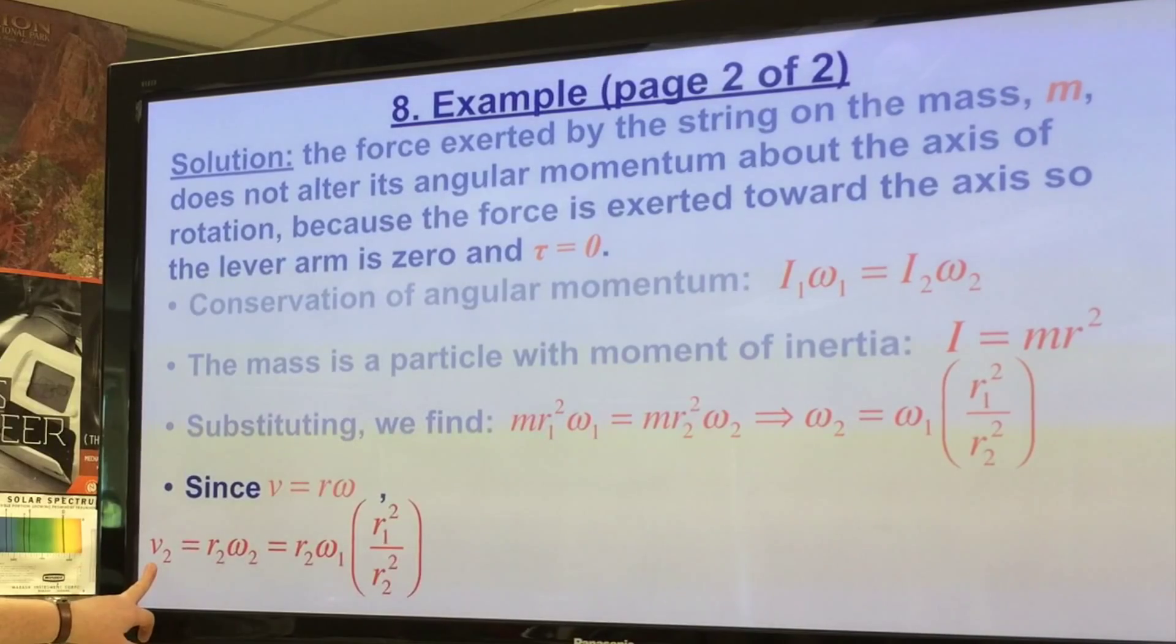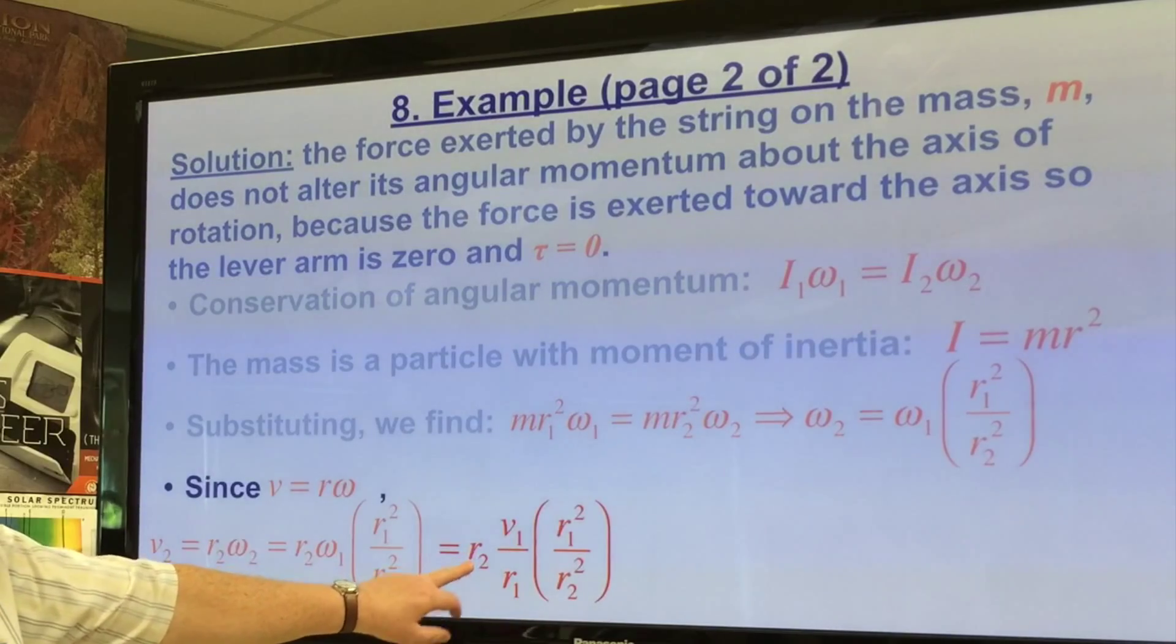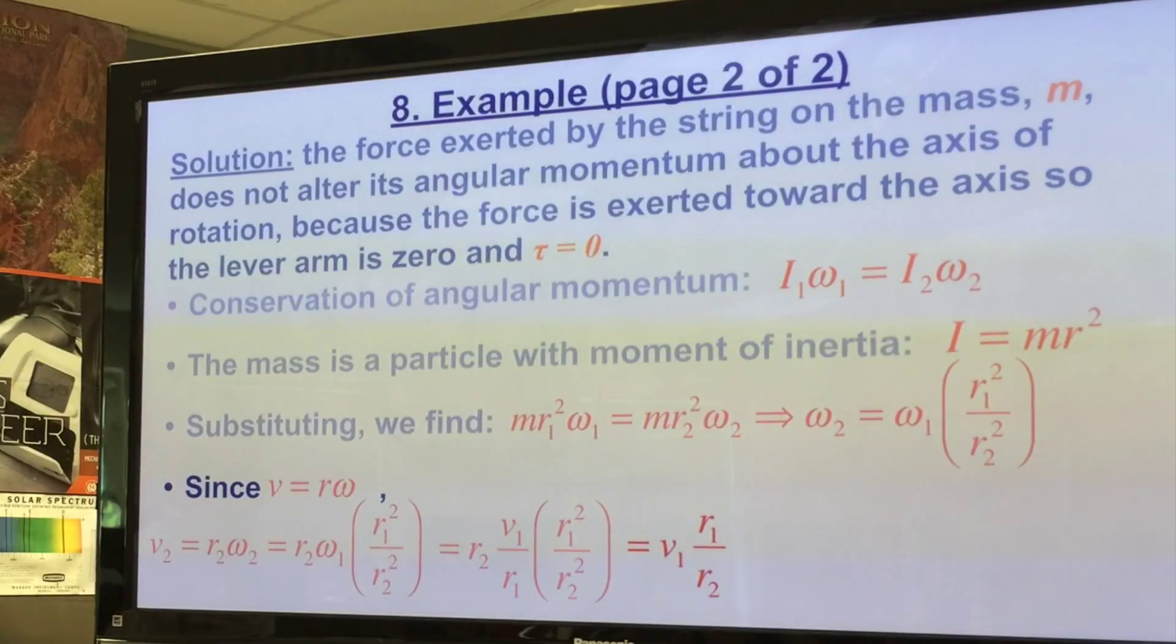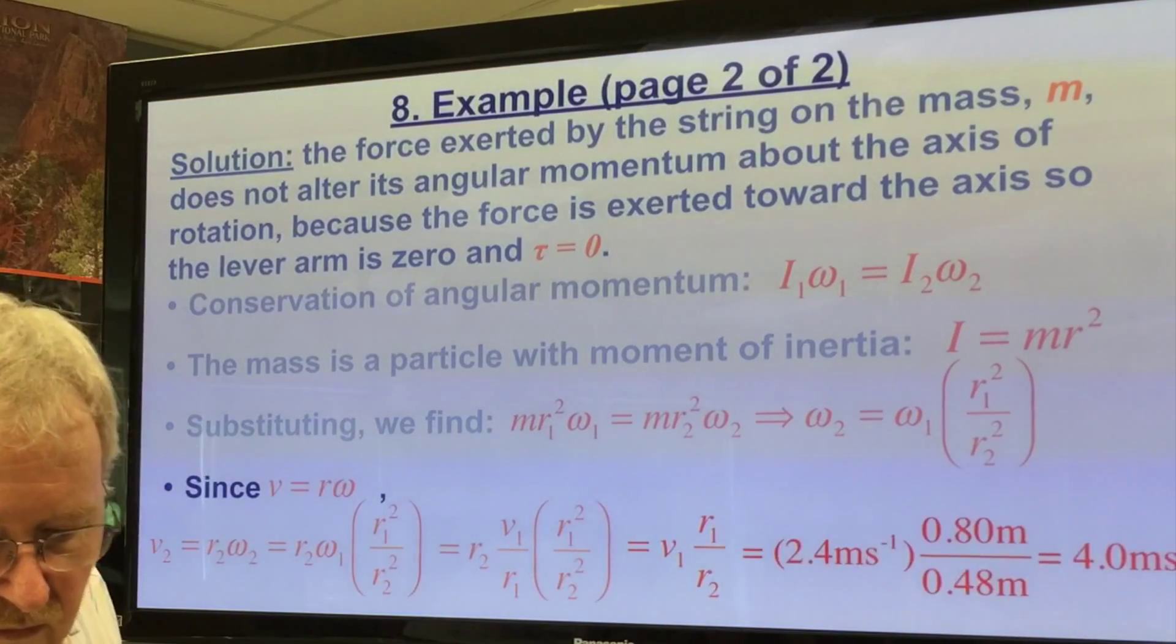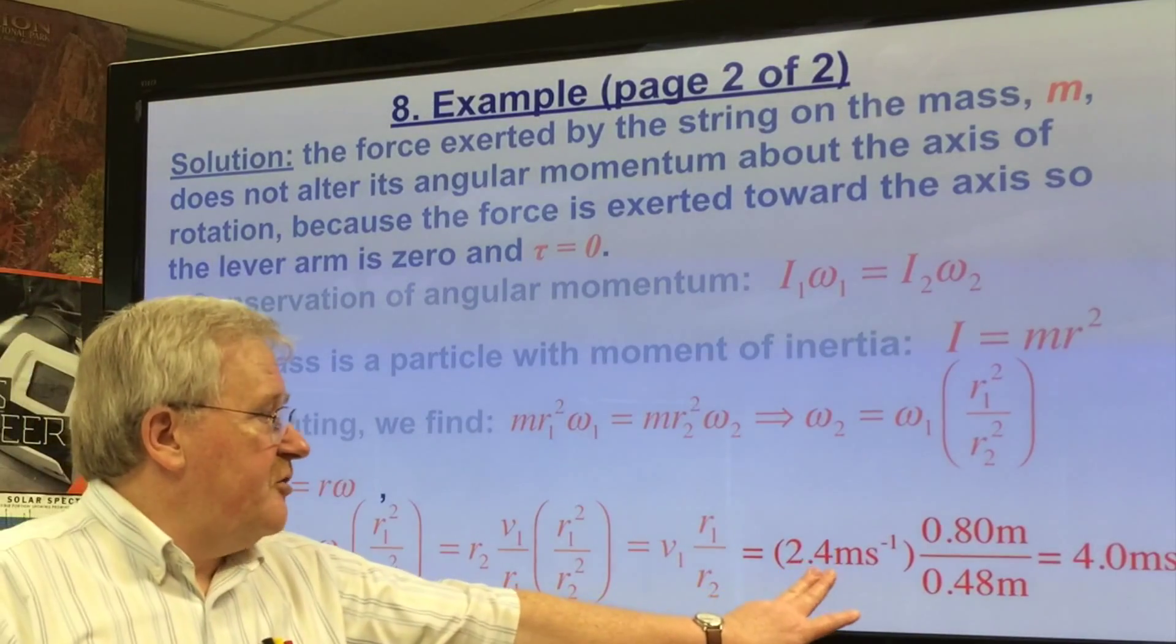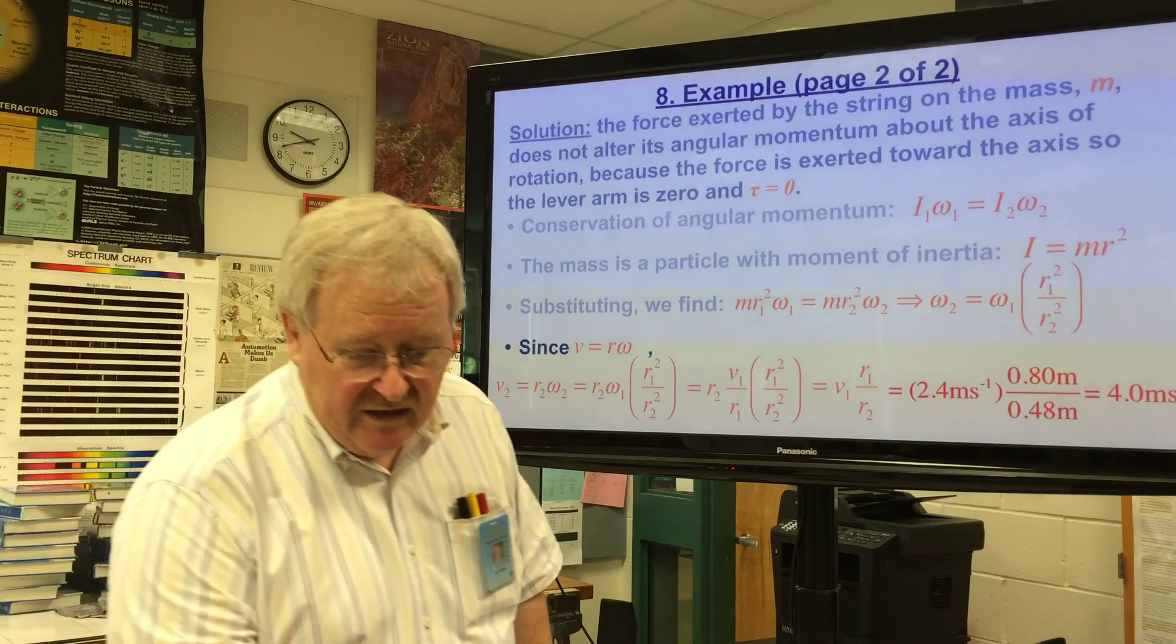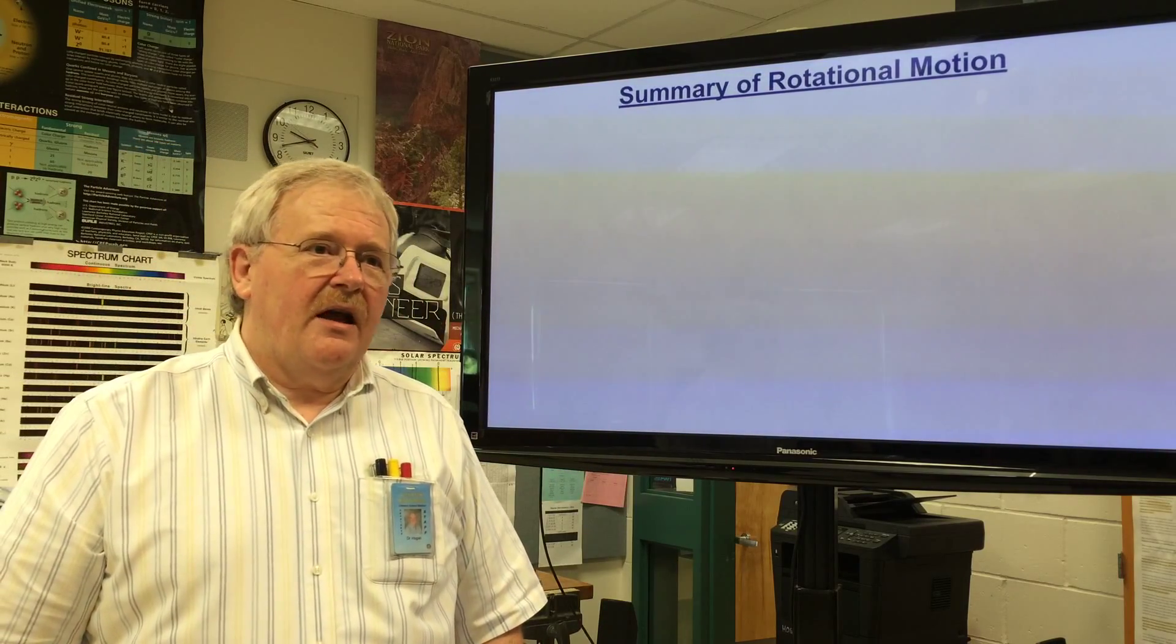And since the tangential velocity is equal to r times the angular velocity, we can now come up with v2 = r2ω2 which is equal to r2ω1 times (r1/r2)². Which is the same as r2(v1/r1)(r1²/r2²) equals v1(r1/r2). So we lose an r1 and an r2. So we now just multiply it through - it's our initial velocity, the first radius divided by the second radius. We see that it's increased to 4 metres per second.